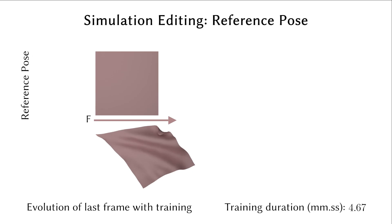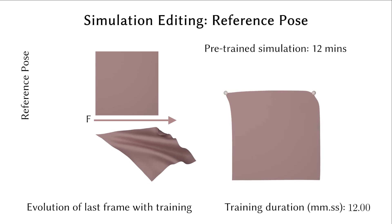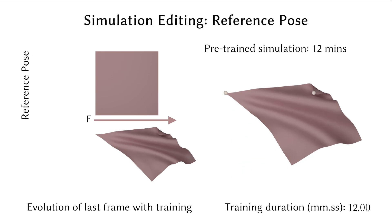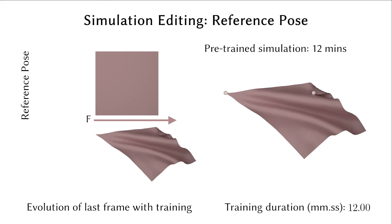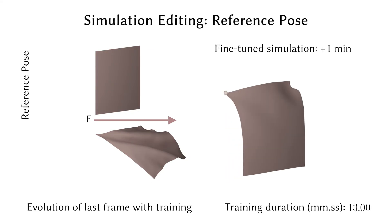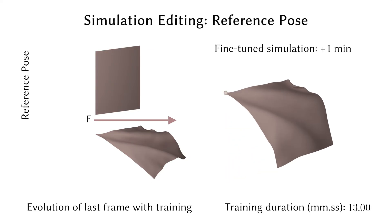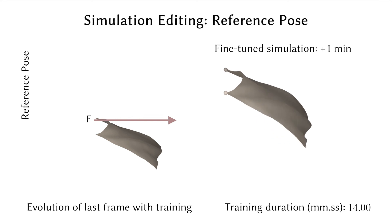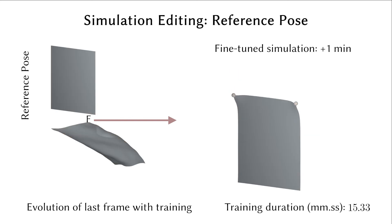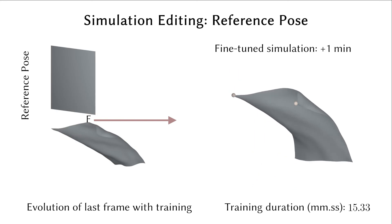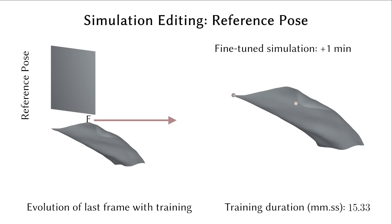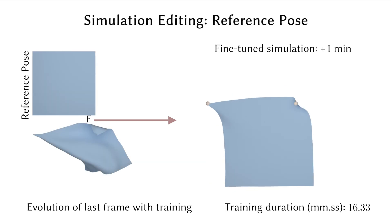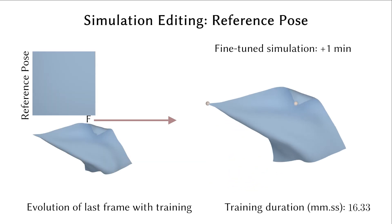In the second example, we smoothly vary the reference poses and the corresponding boundary position, generating novel edited simulations. Editing the reference pose leads to the motion of the cloth towards a fixed force direction but originating from varying initial poses. Fine-tuning is faster than simulation from scratch and offers querying of physically plausible intermediate simulations.